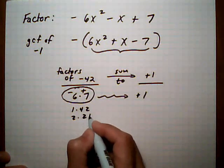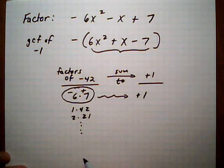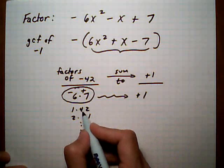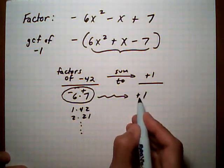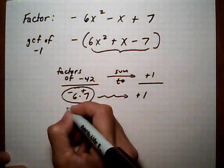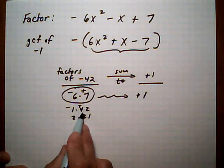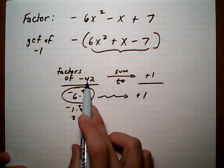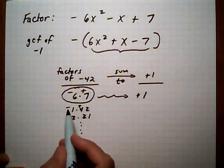and keep going like that until you run out of possibilities. And we always want to give the larger one a positive because we want them to add up to be a positive number, and they have to be opposite sign factors because they're factors of a negative number.